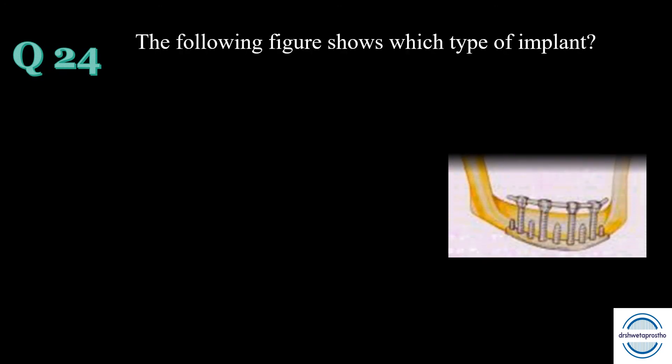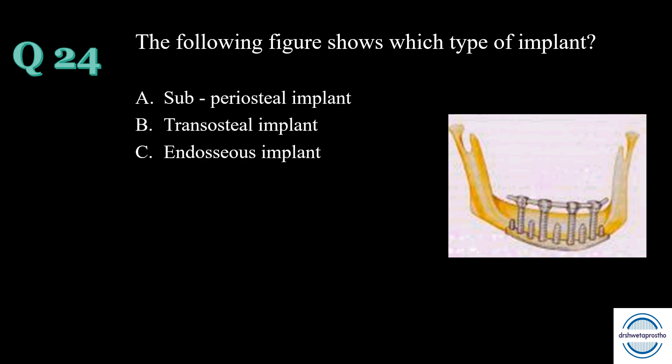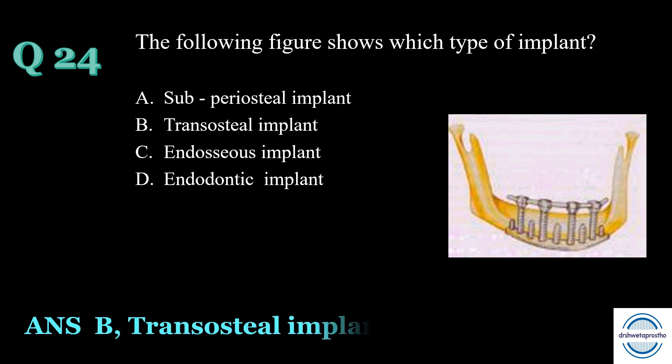Question number twenty-four: The following figure shows which type of dental implant? A) subperiosteal implant, B) transosteal implant, C) endosseous implant, or D) endodontic implant? The answer is B — transosteal implant. These are implants that penetrate entirely through the bone. They are also called transmandibular implants or mandibular staple implants.